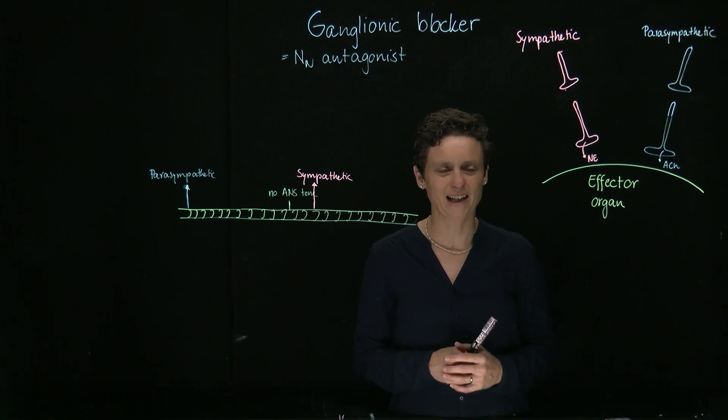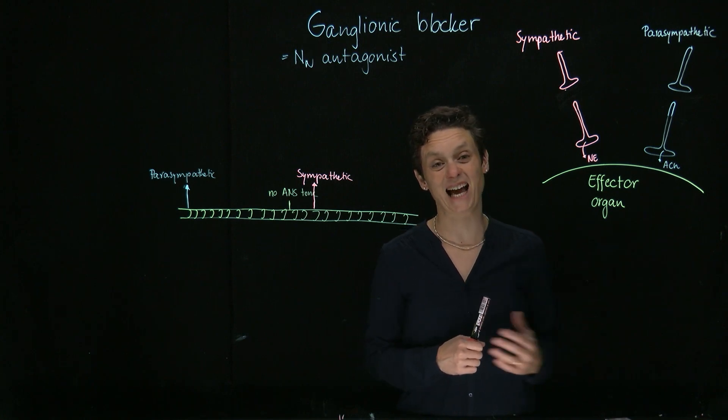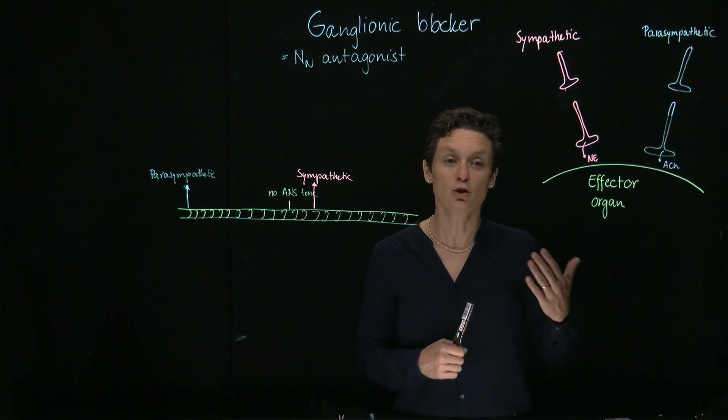So in this video, I want to talk about ganglionic blockers. Ganglionic blockers are NN antagonists. NN stands for nicotinic neural.